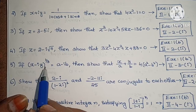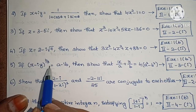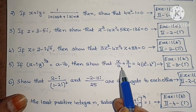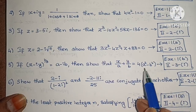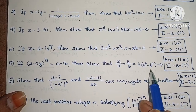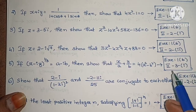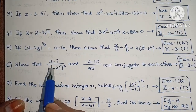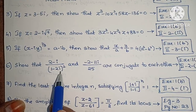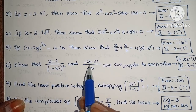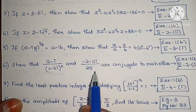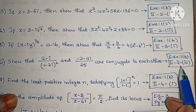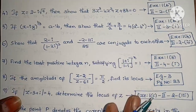Next, if (x - iy)^(1/3) equals a minus ib, then show that x/a plus y/b equals 4(a² - b²). Exercise 1 below, second roman, third, first one. Next, show that (2 - i) / (1 - 2i)² and (-2 - 11i) / 25 are conjugate to each other. Exercise 1 below, second roman, second, third one.